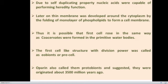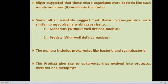According to Oparin, these protobionts were originated about 3,500 million years ago on primitive earth having primitive or reducing conditions. The precells found on primitive earth were similar to microbes, and according to Kligar, the prebiotic structures were bacteria-like, such as nitrosomonas which fix ammonia to nitrate. According to some other scientists, these formed microbes were similar to mycoplasma, which later on gave rise to Monerans and Protista.